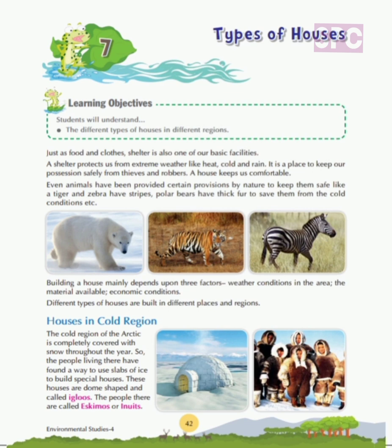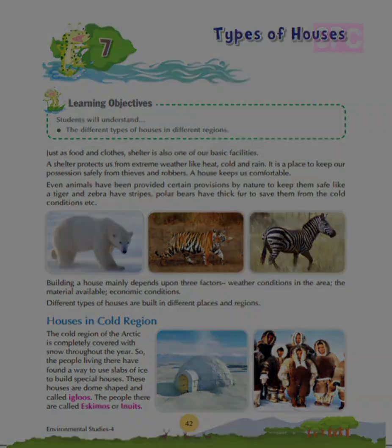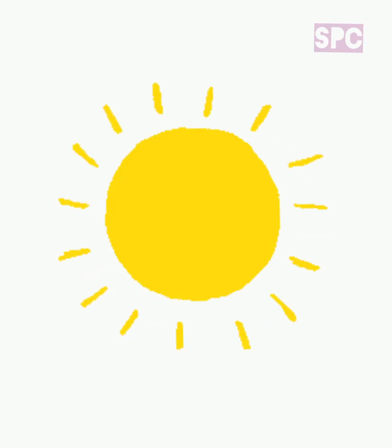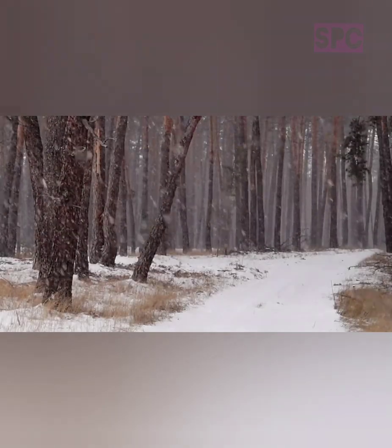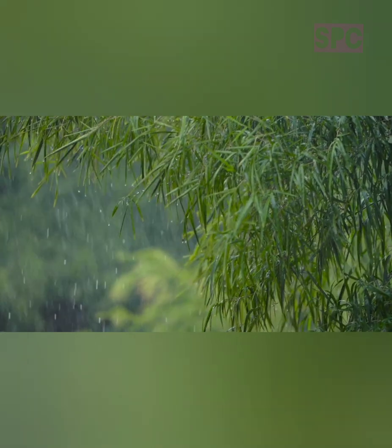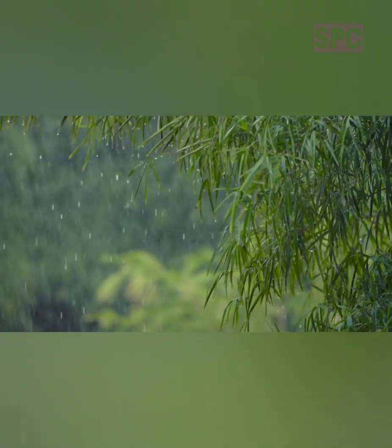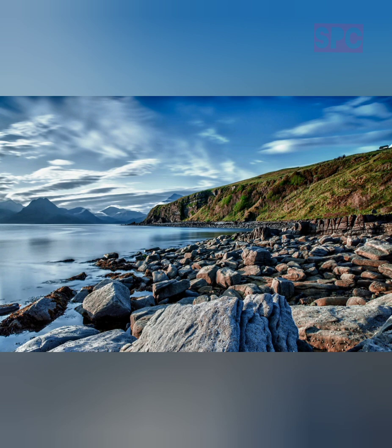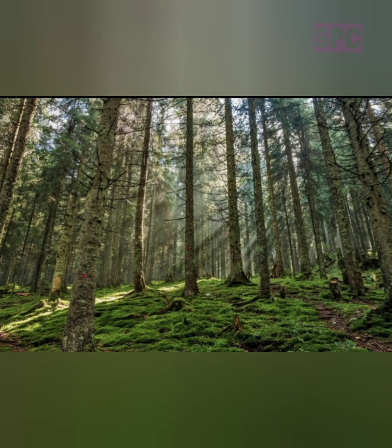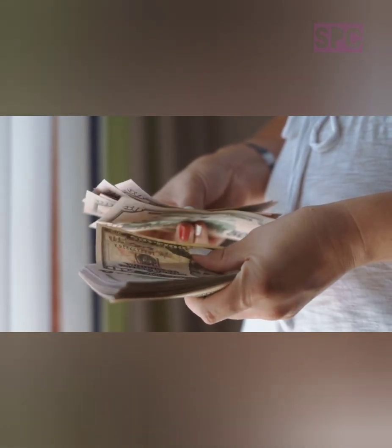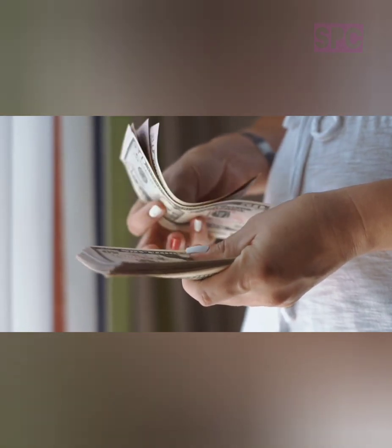Building a house mainly depends on three factors: weather conditions in the area, the material available, and economic conditions. If the weather in that particular region is hot, cold, rainy or moderate, that will affect the kind of house built there. Second, materials available, like the kind of stones, timber, or trees available in that region. Third, economic condition — how much money a person can spend on the construction of the house.